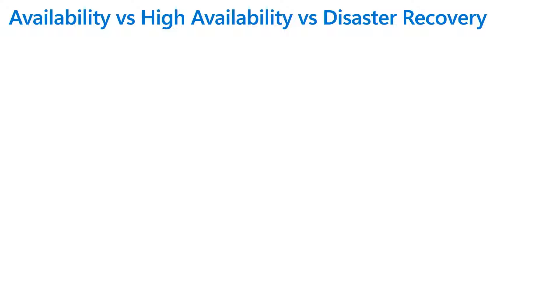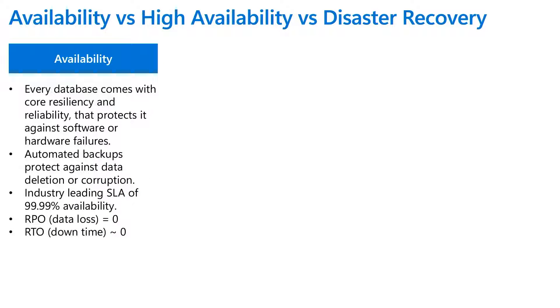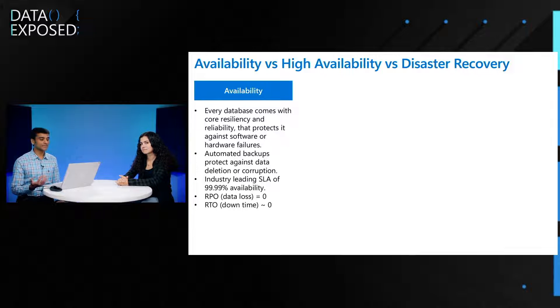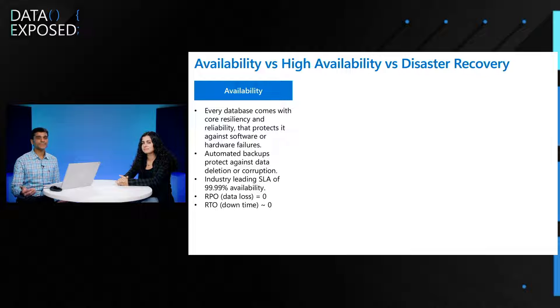Now that we understand what business continuity is, let's jump into the three pillars. One of the key messages we want to send to viewers is understanding the differences between these three. Availability: when a customer provisions a SQL DB database, they're paying for a service. As a service provider, we guarantee that every database comes with its core resiliency and reliability, which will protect it against any kind of failures within the data center. We also take automated backups — consider this as an off-the-shelf feature. You provision a database, you get automated backups, which will protect you for any accidental delete or rare corruption in our systems. And we guarantee an industry-leading SLA of four nines, which means in a month we guarantee just four minutes of downtime. If you breach it, there's a process to contact customer support and ask for an SLA credit.